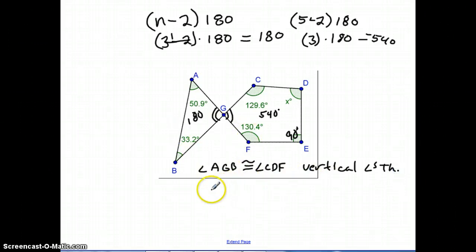So those are the same. Now I can find out what AGB is, because I know this triangle is 180. So I would just take that 180 and subtract from that the 50.9 and the 33.2.